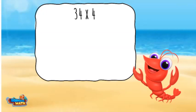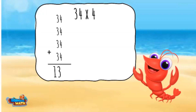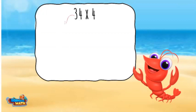Multiplication is just repeated addition. This problem wants to know the product of 34 four times. We add together 34 plus 34 plus 34 plus 34 for a total of 136. Here is another way: 34 can be broken apart into 30 plus 4.